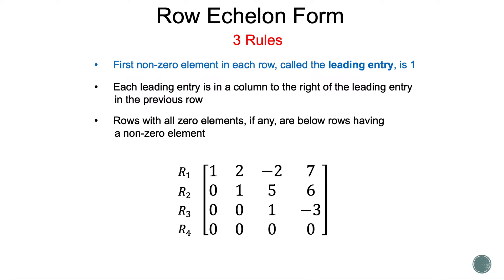Let's use an example to go over the rules, starting with Rule 1. The first non-zero element in each row, called the leading entry, is 1. In row 1, the first number is 1, so that is our leading entry. In row 2, the first number is 0 but the next number is 1, so that is our leading entry. In row 3, the first two numbers are 0 and the next number is 1, so that is our leading entry. What happens if the number after the 0 is not 1?